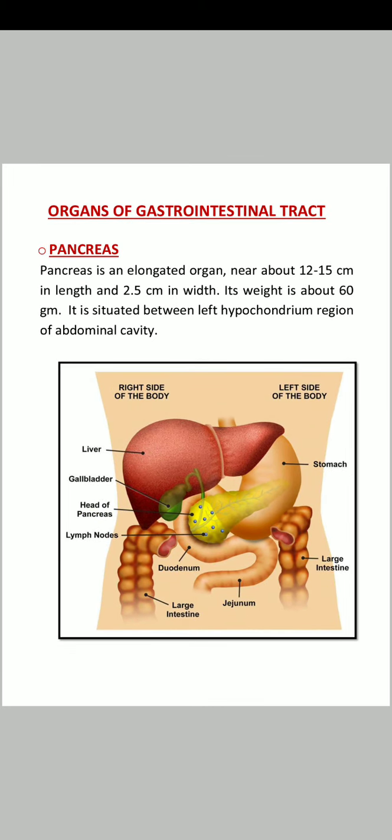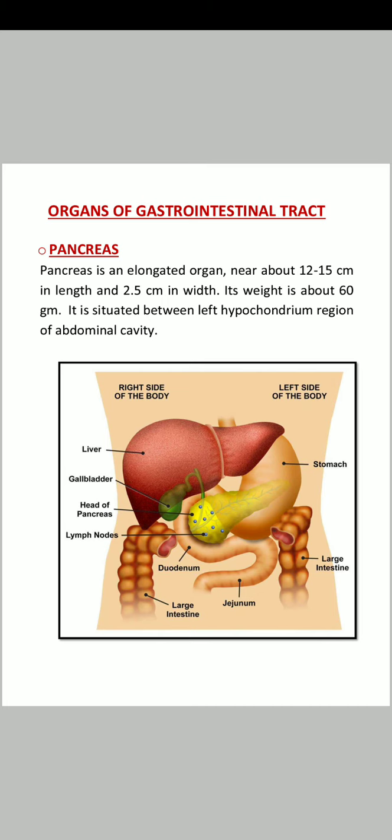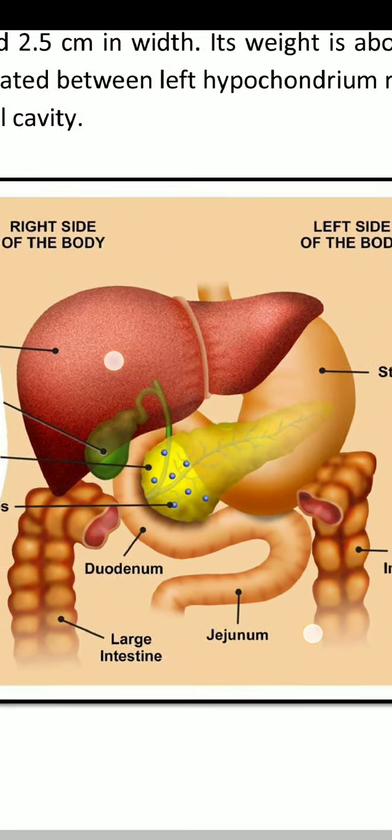Let's see the parts of the pancreas. The pancreas is mainly 3 parts: head, then body, and the tail.